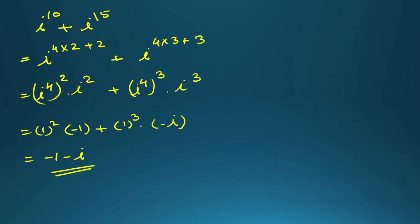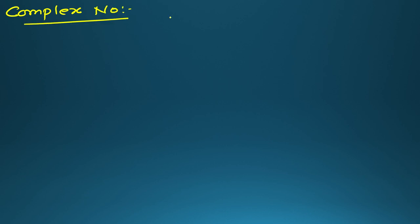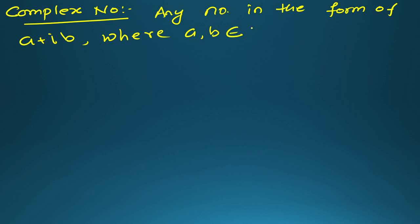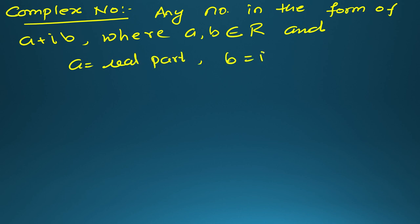I'm sure you understand this calculation for iota. Now we will see what is the meaning of complex number. Any number which is not real is called an imaginary number. Any number in the form a plus ib, where a and b are real numbers, is a complex number, denoted by z. So z equals a plus ib is the general complex number.